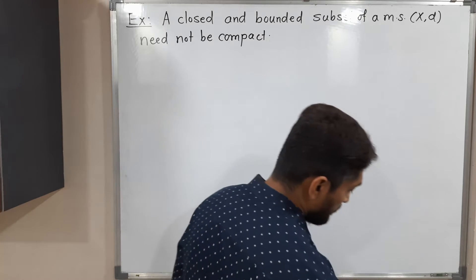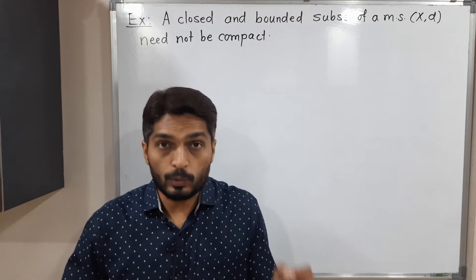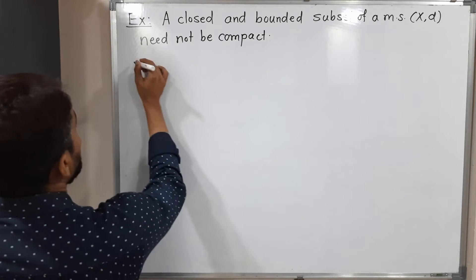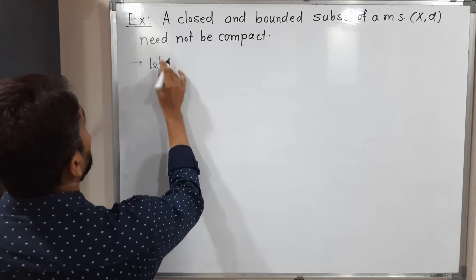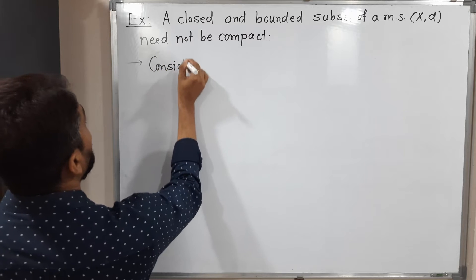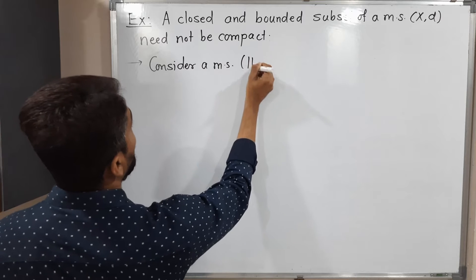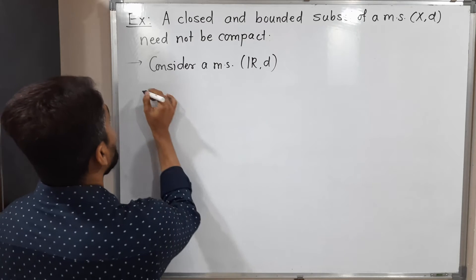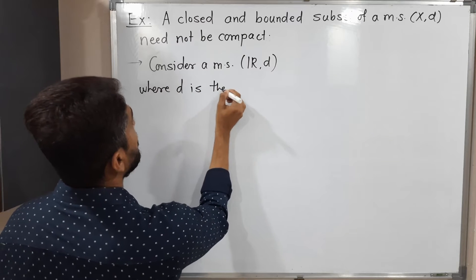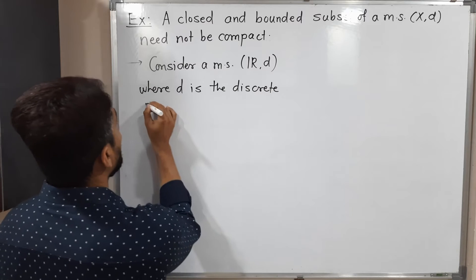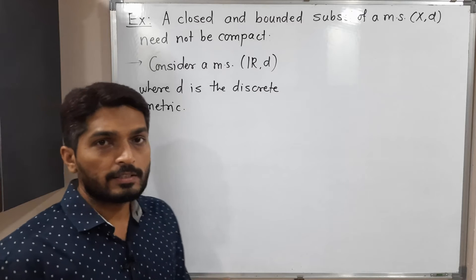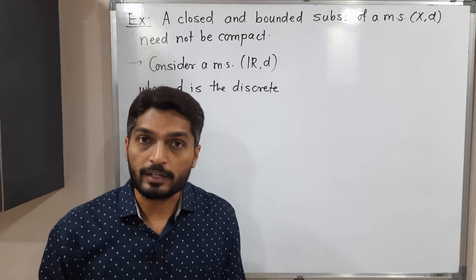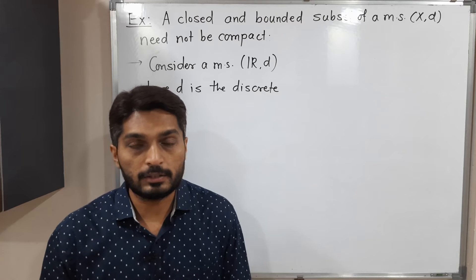We have to find one set which is closed and bounded and prove that it is not compact. Let us consider a metric space (R, D), where R is the set of real numbers and D is not the usual distance — here D is the discrete metric. The discrete metric is defined simply: the distance between X and Y is zero if X equals Y, and D(X, Y) equals one if X and Y are different.